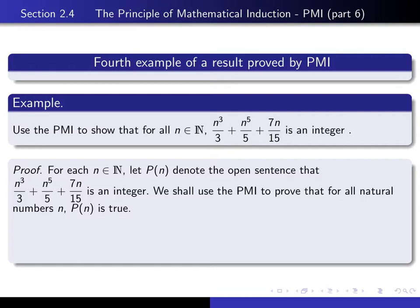Okay, so this is what I was referring to at the beginning of the proof. You say, for each natural number n, we let P(n) denote the open sentence that n³/3 + n⁵/5 + 7n/15 is an integer, and that we're going to use the principle of mathematical induction to prove that for every natural number n, P(n) is true.